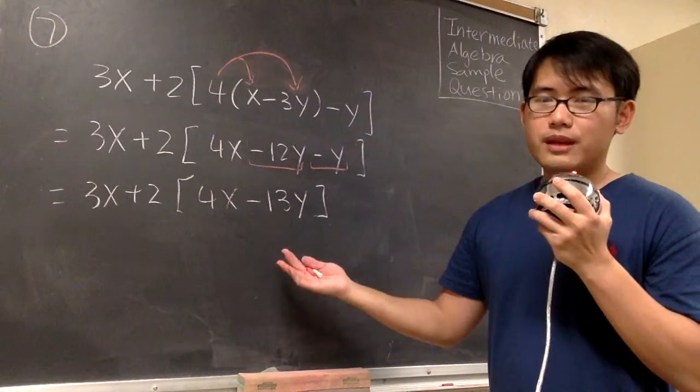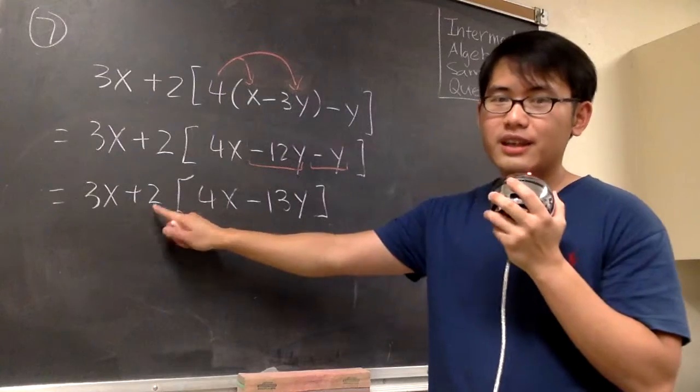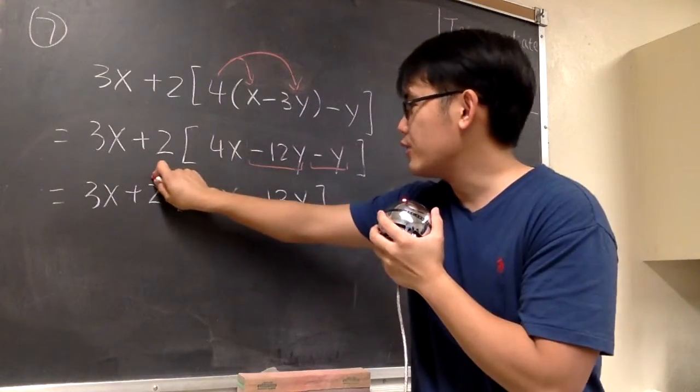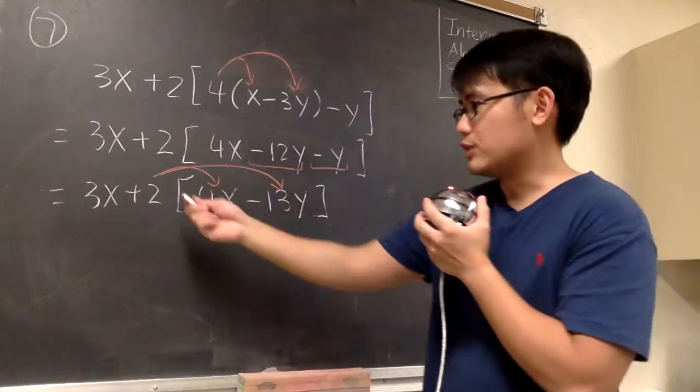So that's as much as we can do inside of the bracket. And then we have this 2 in front of the bracket. Once again, the bracket is just like the parentheses. So we can take the 2 and distribute it into the bracket. Now let's see what we have.